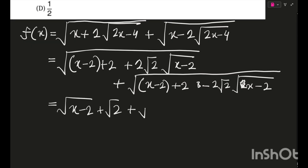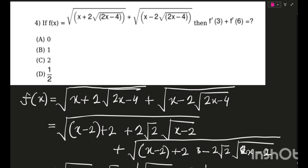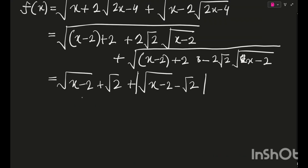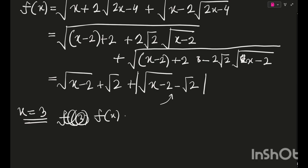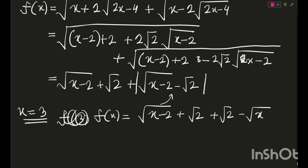So f(x) = |√(x−2) + √2| + |√(x−2) − √2|. For x = 3: the term inside the second modulus is √1 − √2 = 1 − √2, which is negative, so it flips sign. f(3) = (√(x−2) + √2) + (√2 − √(x−2)), and the x-terms cancel, giving a constant. Therefore f'(3) = 0.